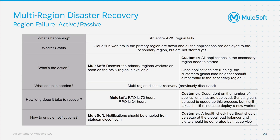Now let's discuss what the failure scenario looks like in an active-passive configuration. Here, the scenario is that the entire AWS region has gone down, but because we are in an active-passive configuration, the workers in the secondary region are deployed but not running and therefore cannot receive traffic. In this case, all applications in the secondary region need to be brought online first, and then the global load balancer should start forwarding traffic to the newly deployed applications in the secondary environment. Depending on the number of applications and whether scripting is utilized to optimize performance, the time for the entire environment to come online can vary drastically — ranging from a few minutes to several hours or even days depending on how quickly deployments are triggered from the customer side.